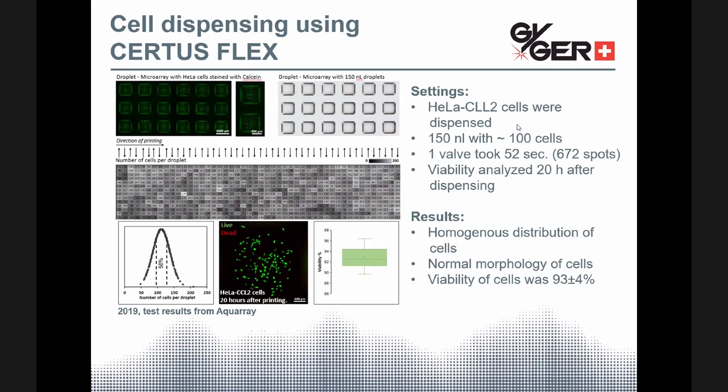For their DMA application, AquaArray used here HeLa cells, which you can see up here stained with calcein, dispensed in 150 nanoliter droplets on the array and 100 cells were dispensed in this volume. And here you can see the direction of printing it was such an S shape. And doing so, a single valve only took 52 seconds in order to dispense 672 spots, which is one microarray. And Boris will show you later that four of these actually would fit on an adapter and can be dispensed at once.